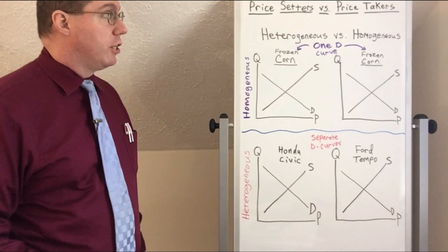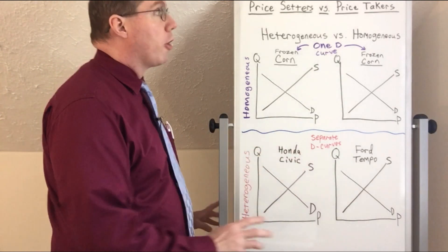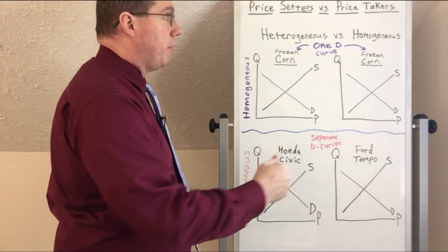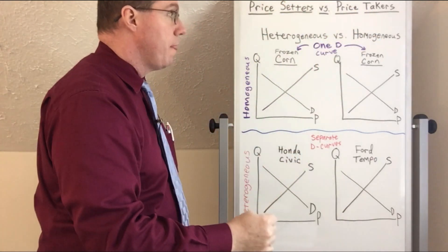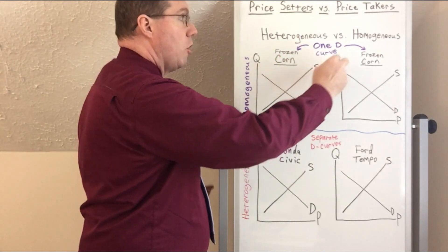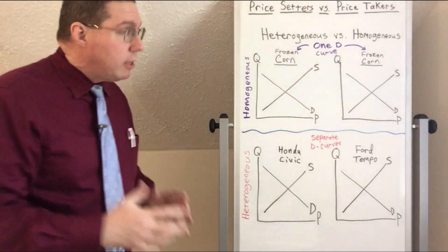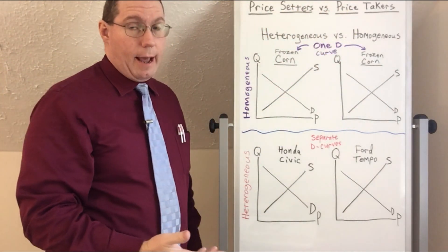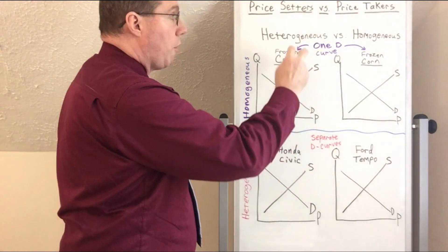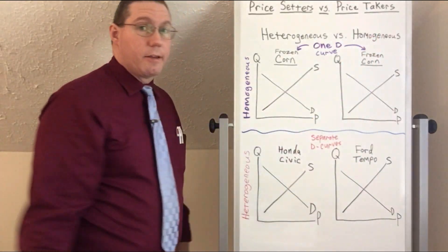In order to understand perfect competition, we have to look at two dimensions of market structure. We're going to talk about market power, which is an issue of whether a company is a price setter or a price taker. We're also going to talk about product differentiation — whether the product is heterogeneous or homogeneous. These two concepts are very related to each other.